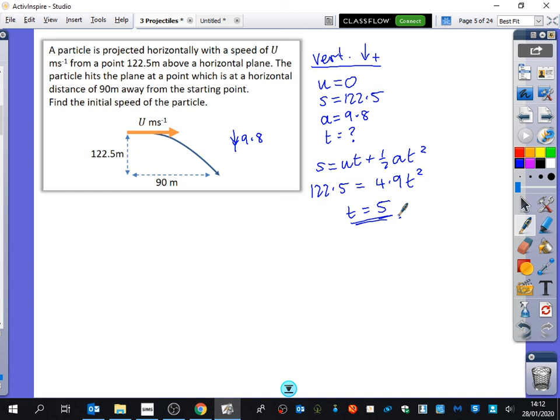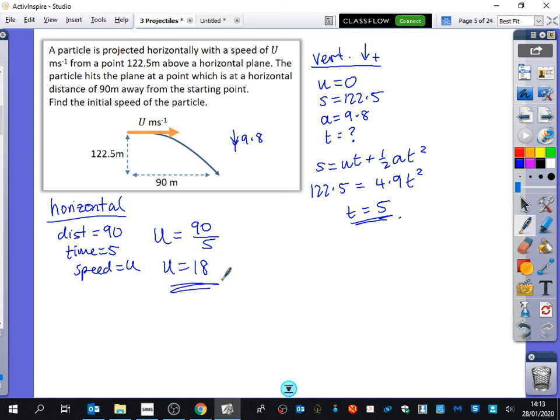Now, you can see why time is the important one. Because that's the one I can put into the horizontal motion. You're always, I would say 95% of the time, time is the question, is the value you need. S equals ut plus a half a t squared is the most common one that you will be using in all of this. Obviously, it's not going to be that all the time. But I would say this equation, 70, 80% of the time. But the time value is the bridge value. 95% of the time, time is what you're looking for. Now, there's no part B for this. But I can then go straight into the horizontal motion. So distance is 90, time is 5, and the speed is u. Speed equals distance over time. So, u is 18 metres per second.